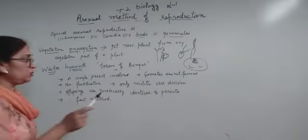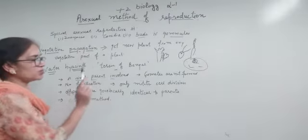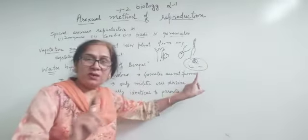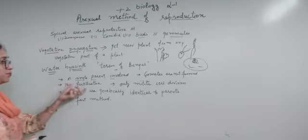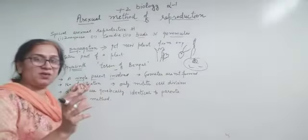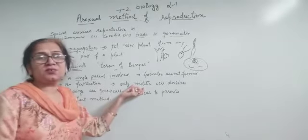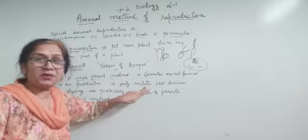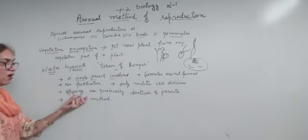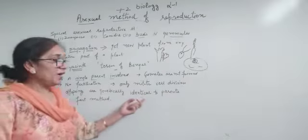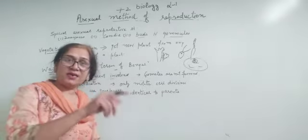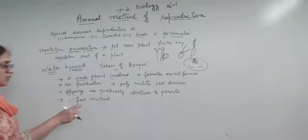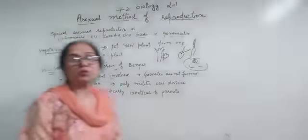Asexual reproduction involves only a single parent. Gametes are not formed. There are no gametes. There is no fertilization between the gametes. Only mitotic cell division is there in the asexual method of reproduction. There is no meiosis because there are no gametes. Offsprings are genetically identical to the parents, genetically as well as morphologically. This is homology, clones bola hai. And it is a fast method of reproduction.